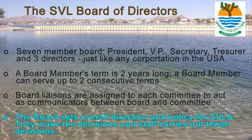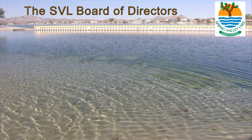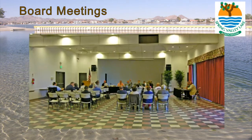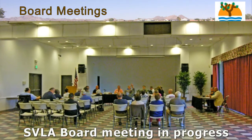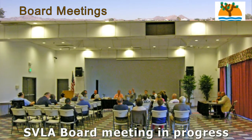One of the main roles of the board is to set overall direction and policy for SVLA. They are responsible for making the decisions and then tasking SVLA staff to carry out those decisions. Here is a board meeting in progress, with the board sitting in the front, staff sitting to the right, and property owners watching in the audience.